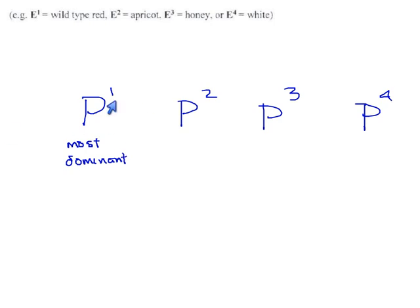The number one ranked allele can override or dominate any of the others. The number two ranked allele can beat anybody except for number one. So this is the second most dominant. Third ranked allele can dominate number four, but not any of the others. And the fourth ranked allele is the lowest one. It is the least dominant, or if you want, it's the most recessive. Everybody else can override or dominate P⁴.